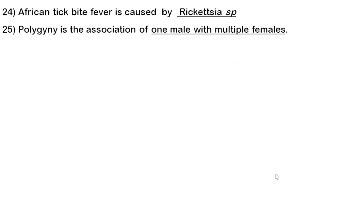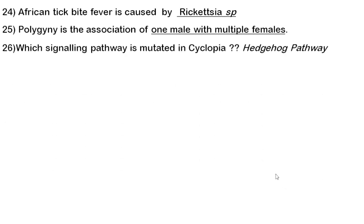Twenty-fifth question: polygyny is the association of one male with multiple females, and polygyny increases male reproductive success. Polyandry means one female with multiple males — the example of polyandry is the sandpiper. You should also know the example of polygyny.